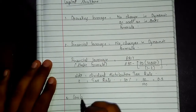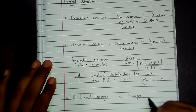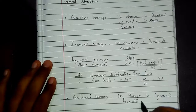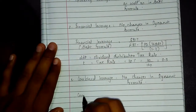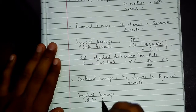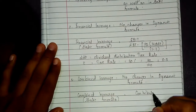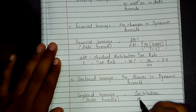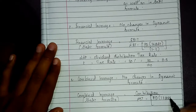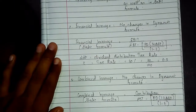Third: combined leverage — no changes in the dynamic formula. The combined leverage static formula equals contribution divided by EBT, minus preference dividend into (1 plus DDT) divided by (1 minus tax), to get the combined leverage.